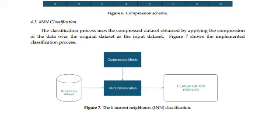This paper presents a variation of the KNN algorithm structured to work with categorical data. Categorical data, due to their nature, can be compressed in order to decrease the memory requirements at the time of executing the classification. The method proposes a previous phase of compression of the data, to then apply the algorithm on the compressed data.